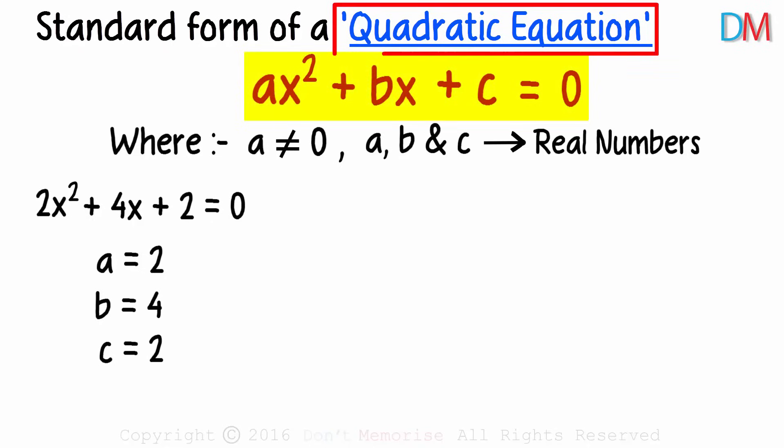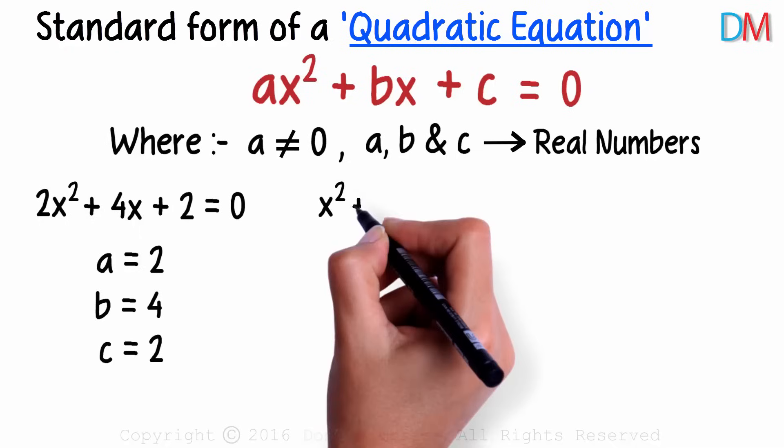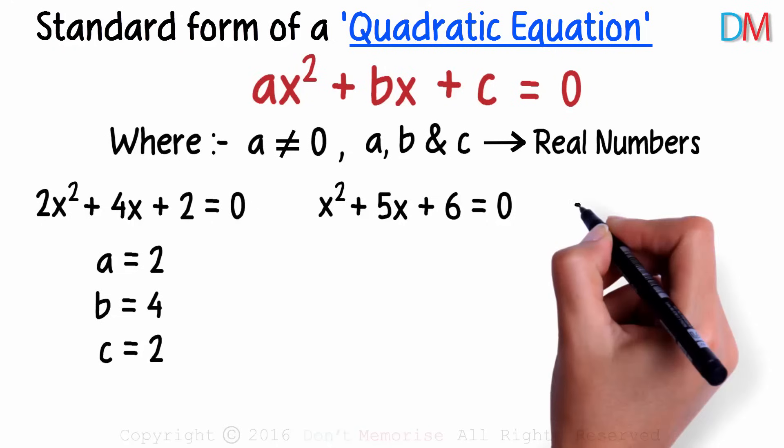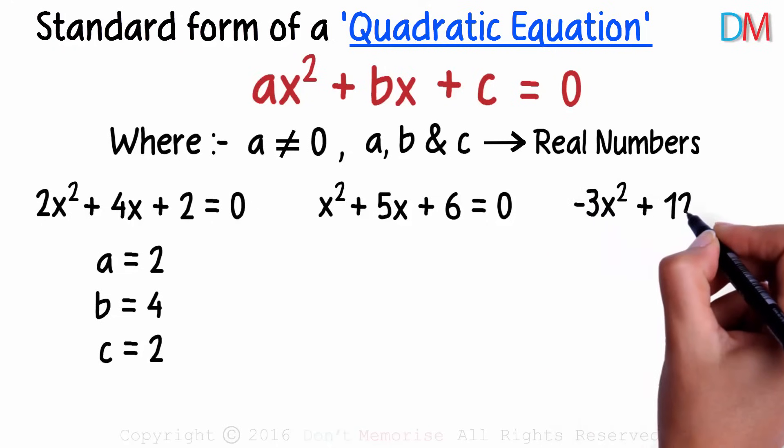This is called a quadratic equation in variable x. x squared plus 5x plus 6 equals zero is also a quadratic equation. Negative 3x squared plus 12 equals zero too.